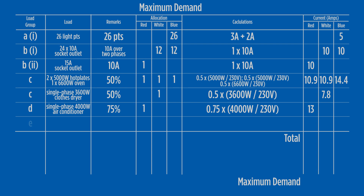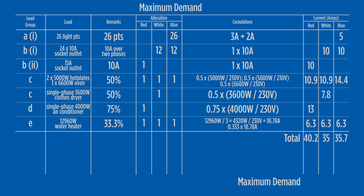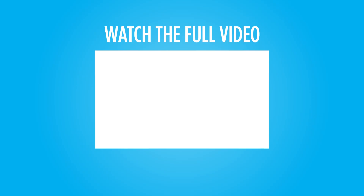Next, we introduce load group E, which covers instantaneous hot water systems. These three-phase loads will contribute the same loading to each phase. The calculation is 33.3% of the connected load, which gives 6.3 amps per phase. When the current value of each phase is added together, the red phase is the highest loaded of the three, at 40.2 amps. This value will be the maximum demand of the installation.